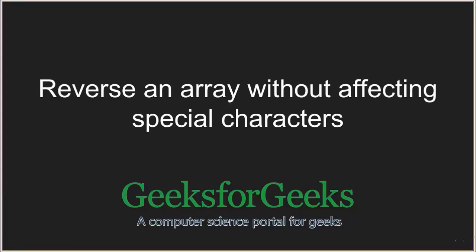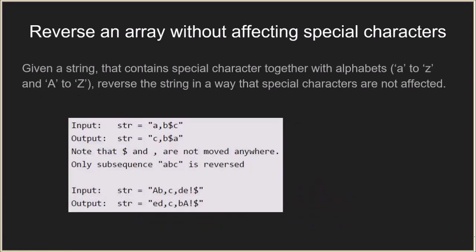Hello everyone and welcome to GeeksforGeeks. In this problem we are going to see how to reverse an array without affecting special characters. You will be given a string that contains special characters together with alphabets — from small a to small z and from capital A to capital Z. The string will be a combination of both special characters and alphabets, and we have to reverse the string such that special characters are not affected — their positions remain the same — but the positions of the alphabets are reversed.